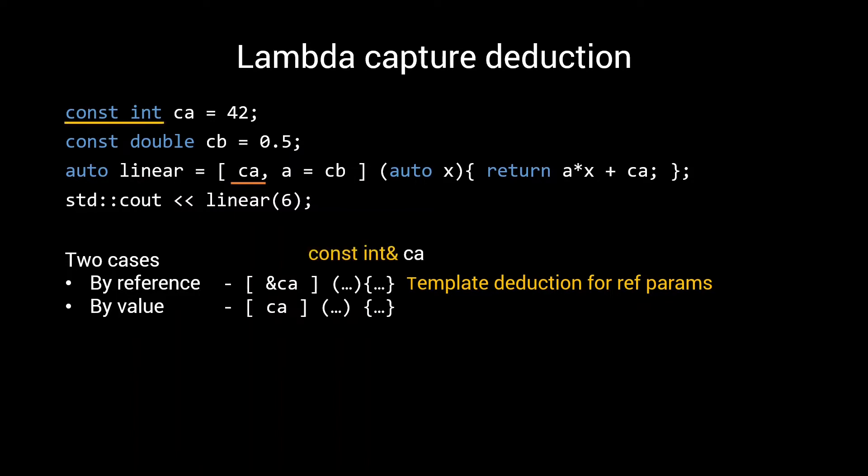In this case, the deduced type would be const int, making the parameter type, which is the type of our local CA, a reference to const int.